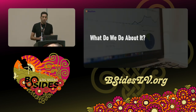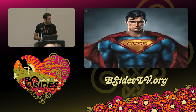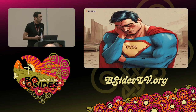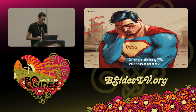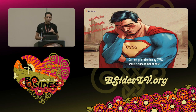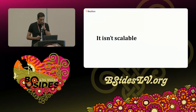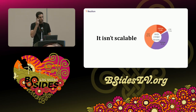So what do we normally do about it? We turn to CVSS. The problem with CVSS is that it's suboptimal — I would say it's not effective, it's not scalable, and it doesn't reflect actual risk. Around 57% of all vulnerabilities with a CVSS risk score in NVD are rated high or critical.